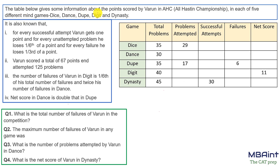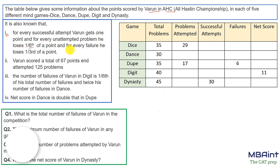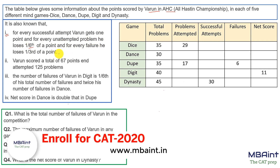The table below shows information about the points scored by Varun in competition AHC in each of the five different mind games: dice, dance, dupe, digit, and dynasty. The first point says that for every successful attempt, Varun gets one point; for every unattempted problem, he loses one-sixth of a point; and for every failure, he loses one-third of a point — similar to what happens in a CAT exam.